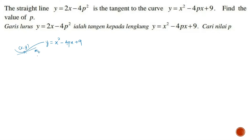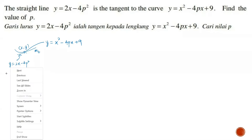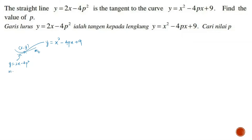In this case, we do not have the gradient of tangent directly, but we do have the equation of the tangent, which is y equals to 2x minus 4p squared. And just nice, this is in gradient form. Therefore, from here, we know the gradient. The gradient of tangent is 2, so mt equals to 2.